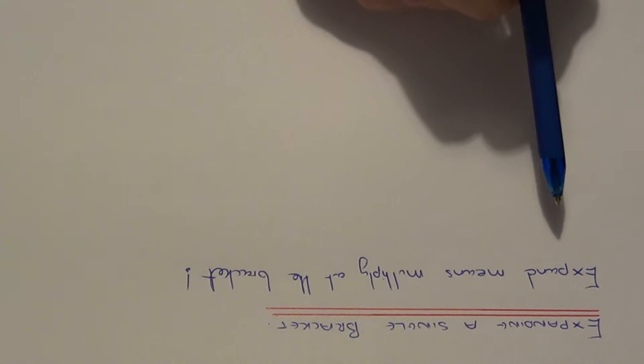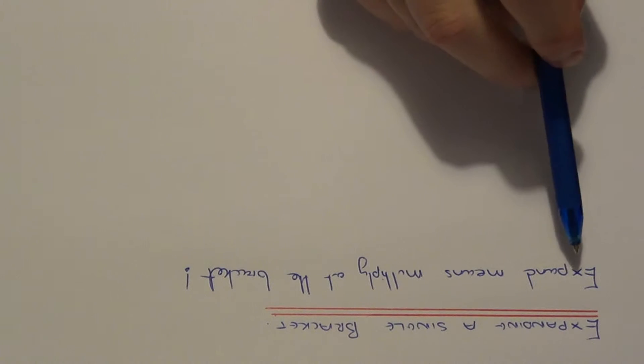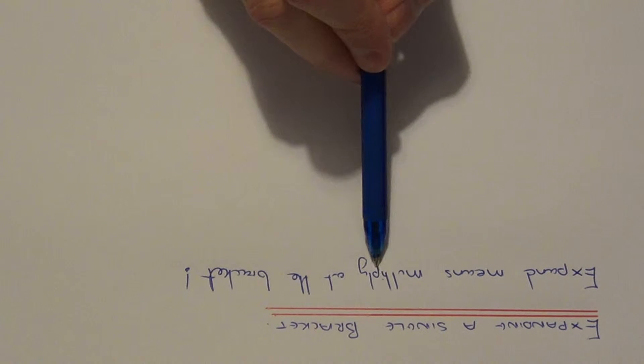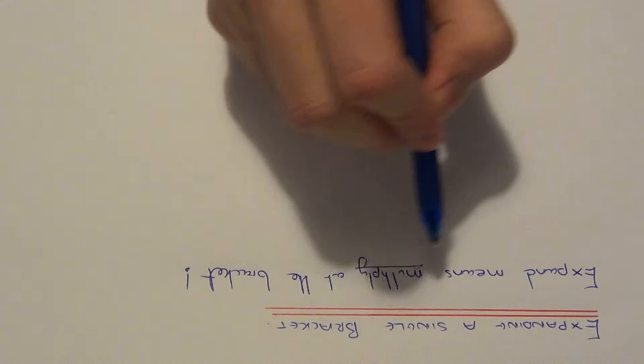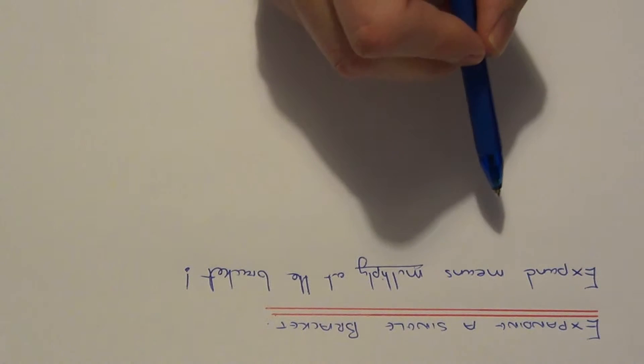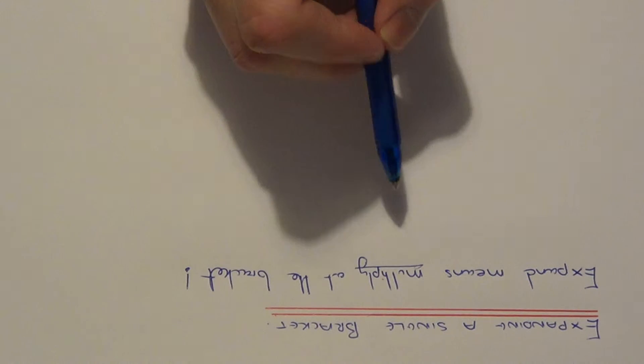Today I'm going to show you how to expand a single bracket. In maths you need to know that expand means you need to multiply the bracket out. So whatever you've got at the start of the bracket needs to multiply everything inside the bracket.